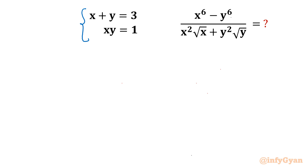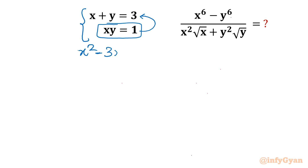What I will do — either you can frame one quadratic equation or simply find out the value of y, that is 1 over x, and substitute. So the equation would be x² minus (sum of roots) 3x plus 1 equals 0.